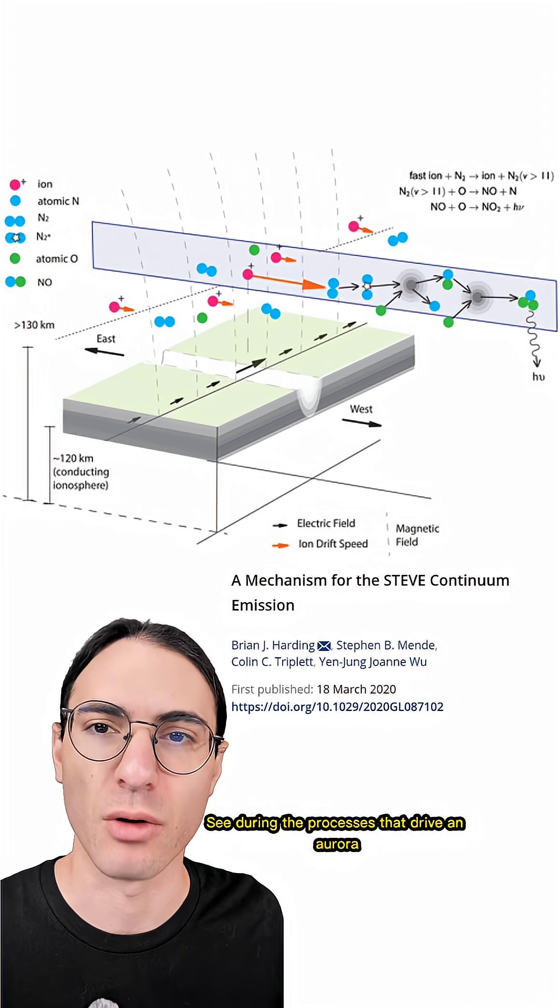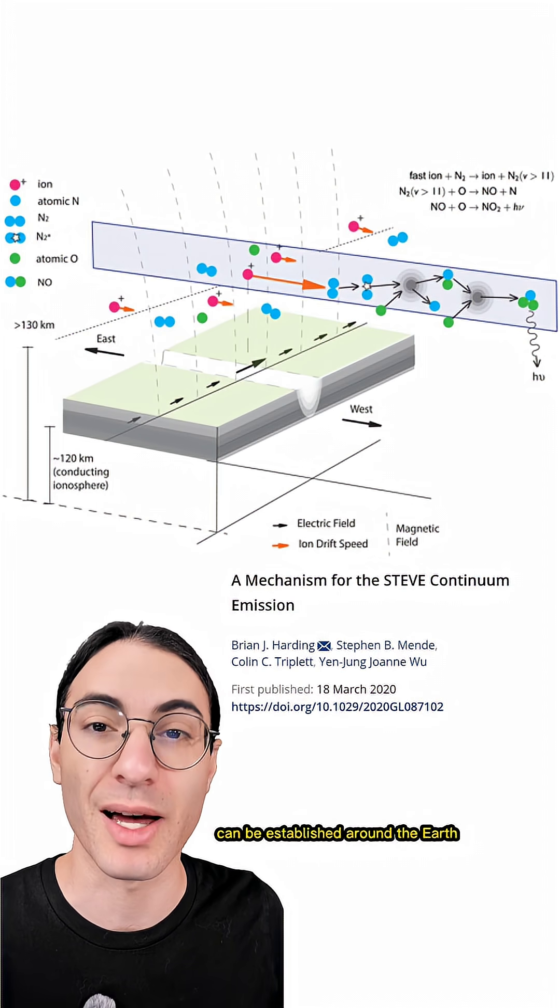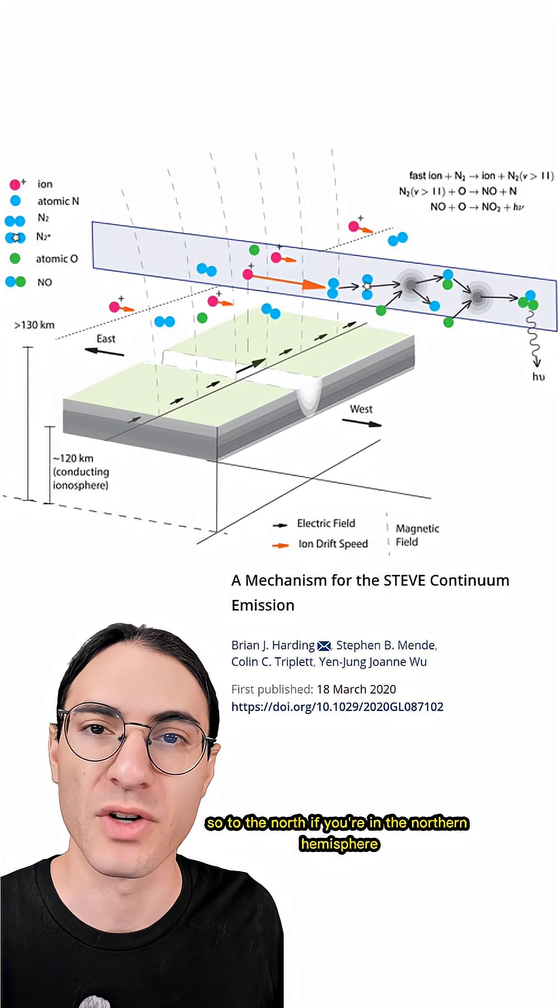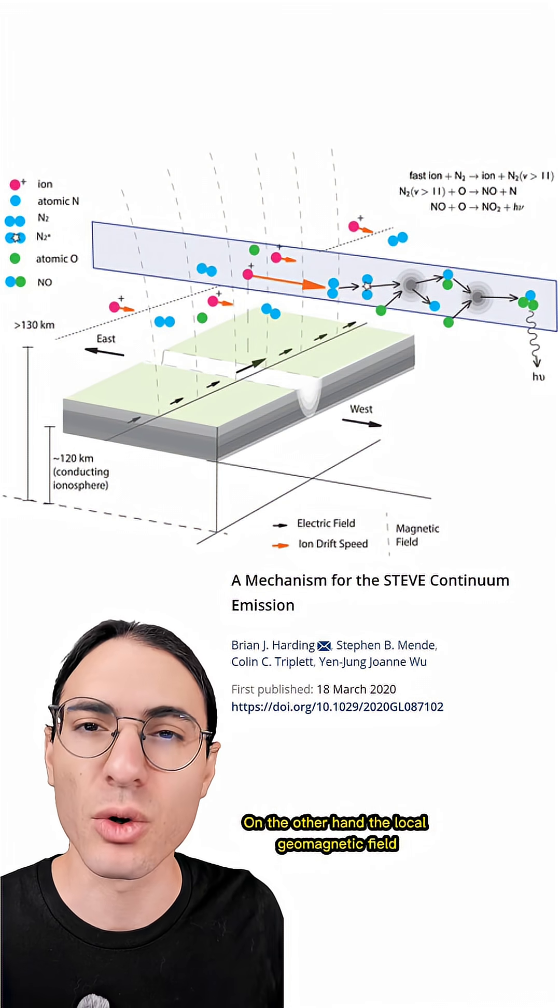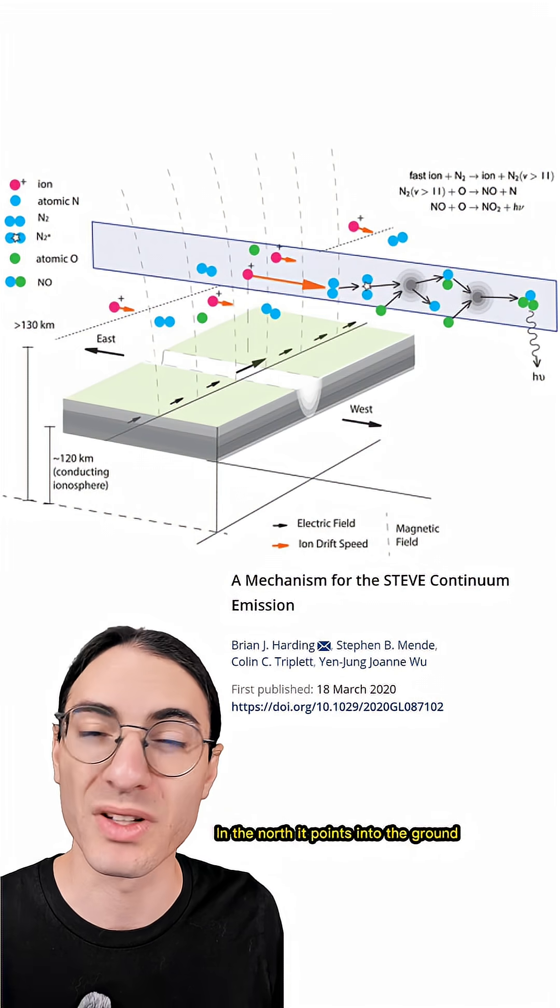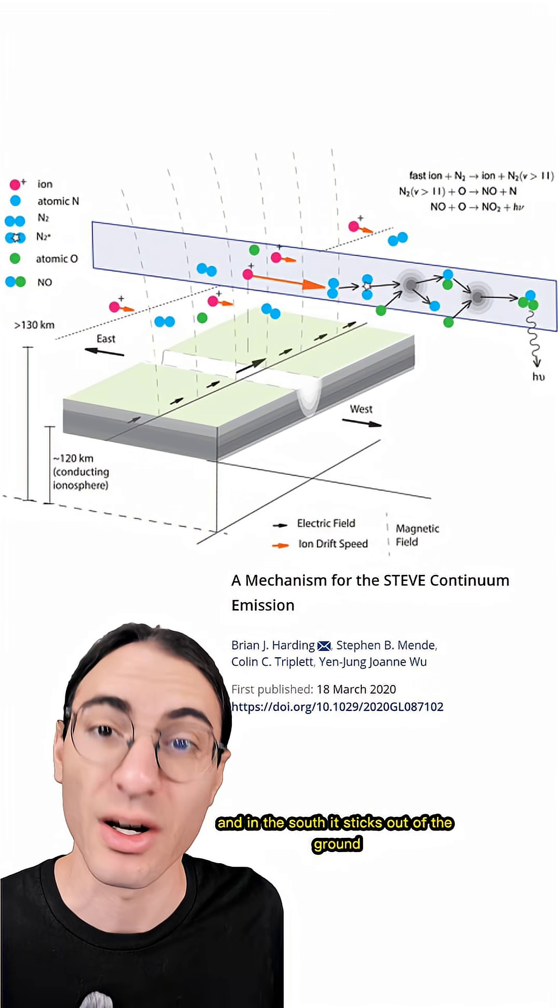See, during the processes that drive an aurora, an intense electric field can be established around the earth pointing towards the poles. So to the north if you're in the northern hemisphere, or to the south if you're in the southern hemisphere. On the other hand, the local geomagnetic field basically always points in the same direction. In the north it points into the ground, and in the south it sticks out of the ground.